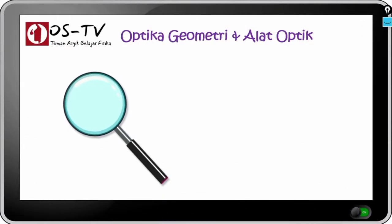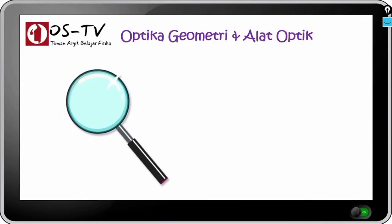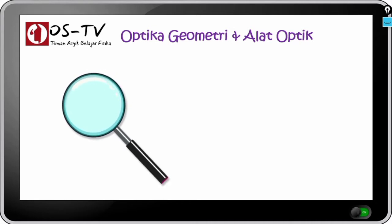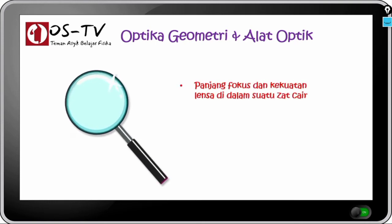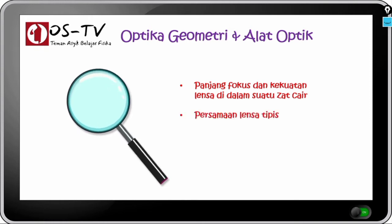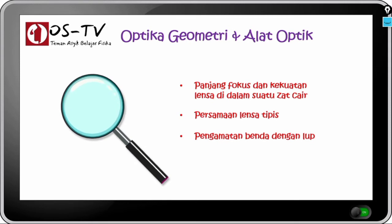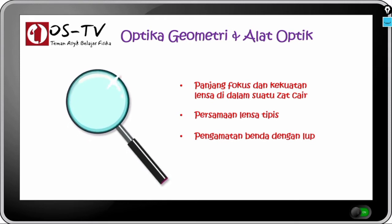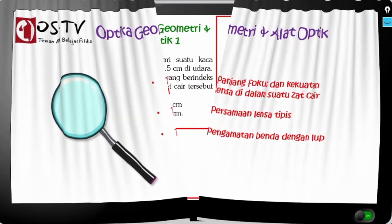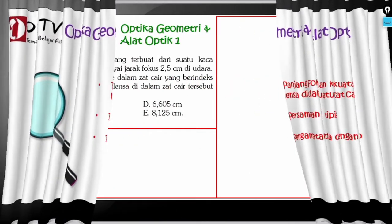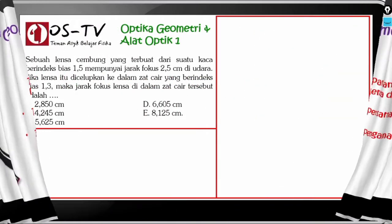Soal-soal optika geometri dan alat-alat optik yang sering keluar dalam UTBK SBMPTN antara lain berkaitan dengan panjang fokus dan kekuatan lensa di dalam suatu zat cair, serta persamaan lensa tipis dan pengamatan benda dengan menggunakan lup. Baiklah, kita coba beberapa soal untuk kita bahas dalam tayangan ini.